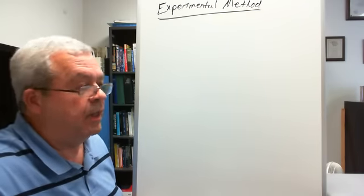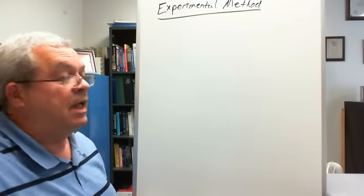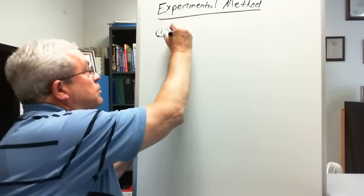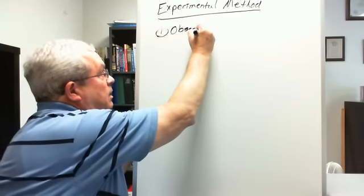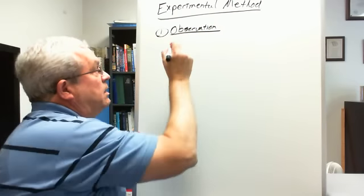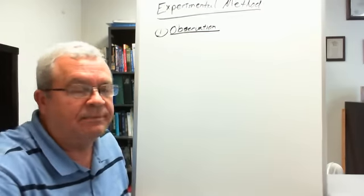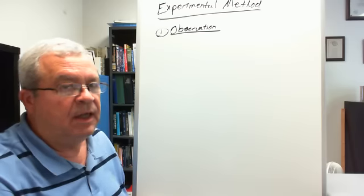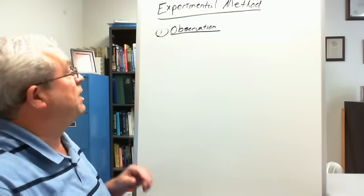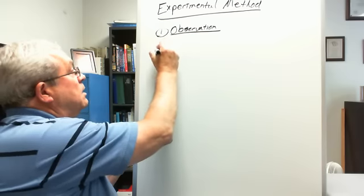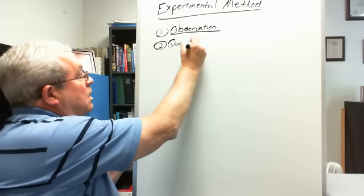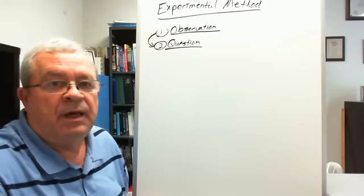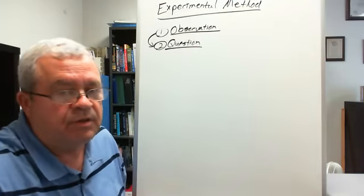What's the first step in the logical flow of a scientific investigation? Well, it is observation. Anyone that might do that experiment with bean seeds has been looking at bean seeds for a while, and they even try to grow bean seeds. Based on that observation, the second box is question.